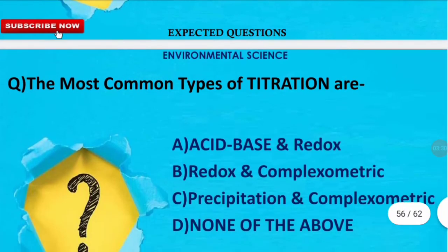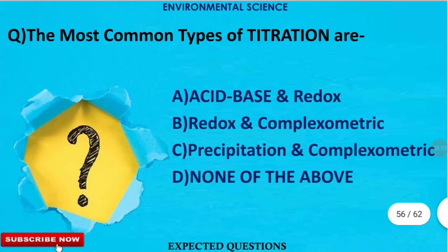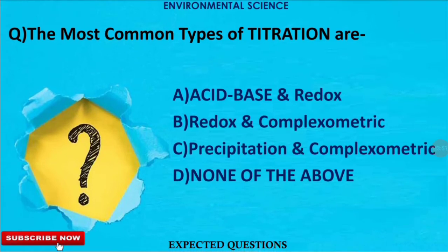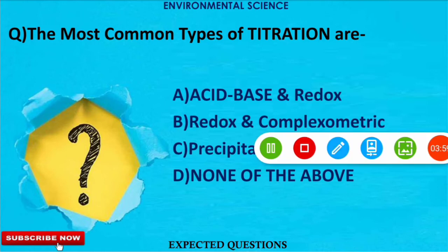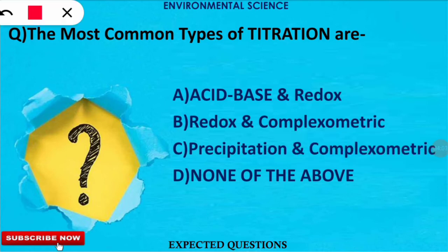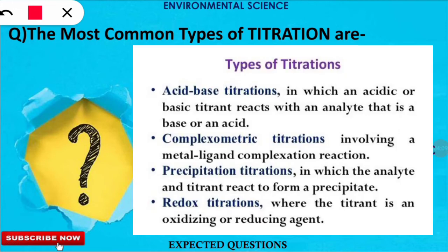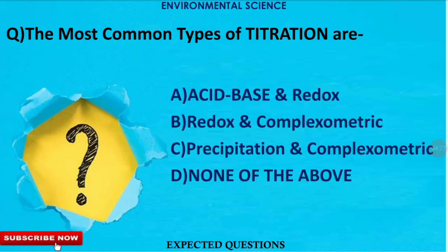The next question is: what are the most common types of titration technique? The options are on your screen. The correct option is A. Acid-base titration and redox titration are the most common types. Redox titration involves oxidation and reduction reactions, while in acid-base titration, a reaction between an acid and a base takes place.